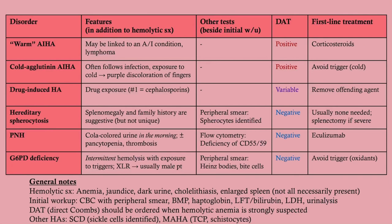To recap: know the general hemolytic symptoms and initial workup, know what a positive direct Coombs test means — autoimmune — and know the unique distinguishing features and treatments for each hemolytic anemia, especially for Step 2 and 3.